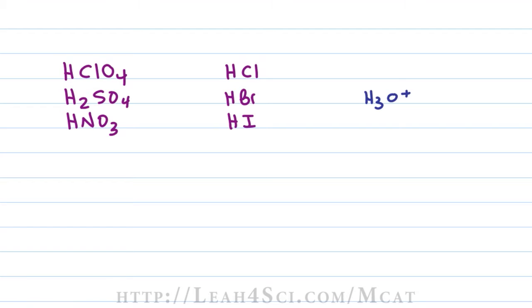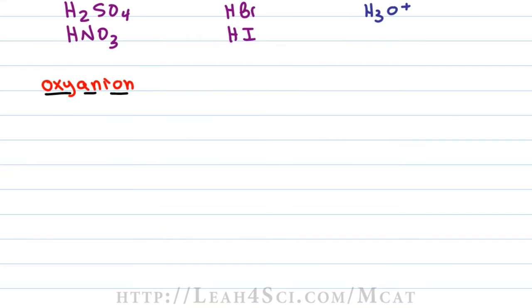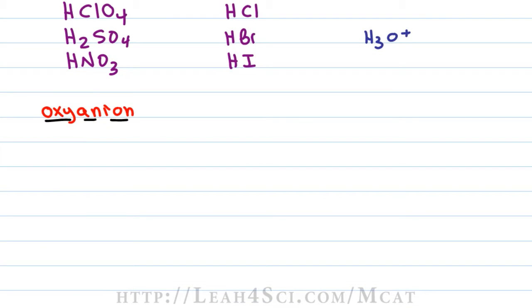There are two categories of strong acids to memorize for the MCAT. The first are acids made by associating a proton with an oxyanion. Oxyanion means a molecule that has oxygens and a negative charge. If you take away a proton from each of these acids, you'll get a negative charge. The reason these specific oxyanion acids are considered so strong is because the conjugate bases are very, very stable.